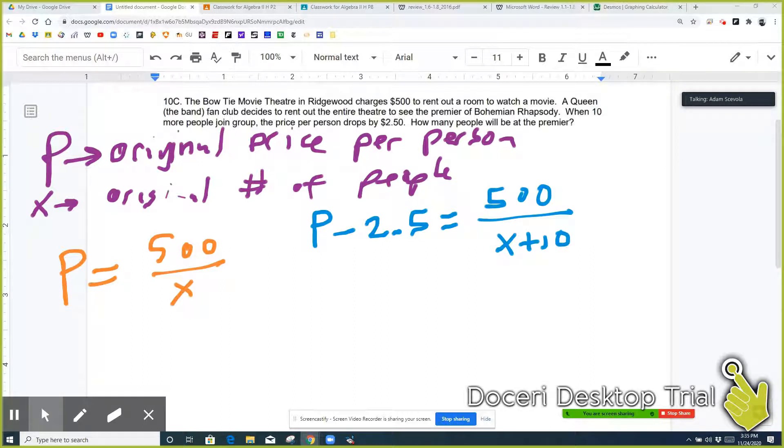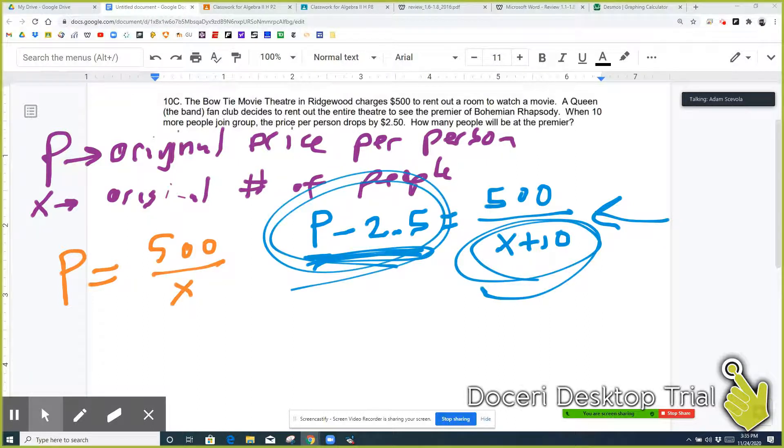So 500 over X is equal to the original price per person. And then the new price per person is the original price minus $2.50. And we can evaluate that by doing 500 over X plus 10. So we're dividing it amongst more people, so the price is less.